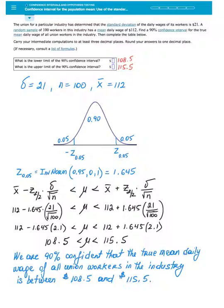The union for a particular industry has determined that the standard deviation of the daily wages of its workers is $21. A random sample of 100 workers in this industry has a mean daily wage of $112. Find a 90% confidence interval for the true mean daily wage of all union workers in the industry, then complete the table below. Carry your intermediate computations to at least three decimal places and round your answers to one decimal place.